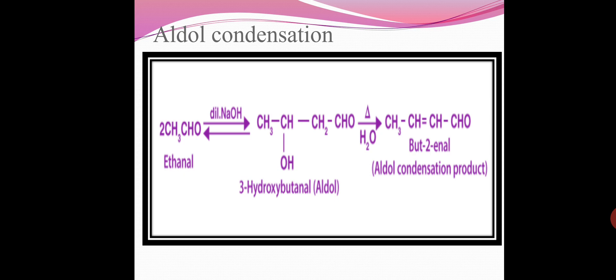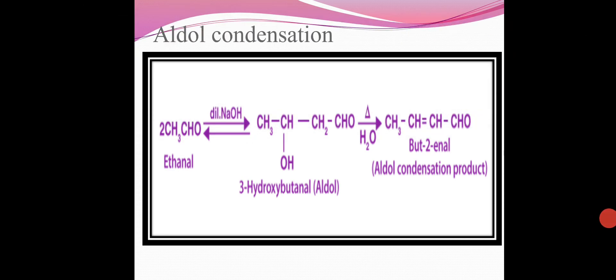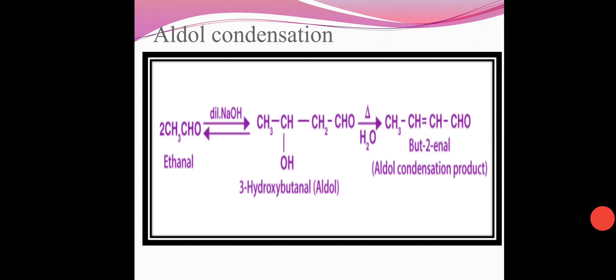Then aldol condensation. Aldehydes containing at least one alpha hydrogen atom react in presence of dilute alkali as a catalyst to give beta-hydroxy aldehyde called aldol. This reaction is known as aldol condensation.